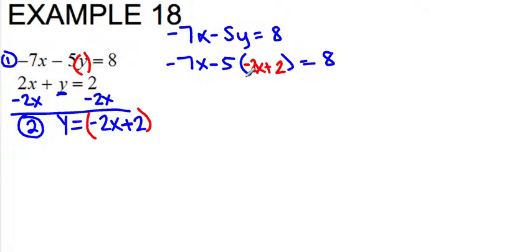And now I have to distribute the negative 5. So I'm distributing negative 5 to both terms. Negative 5 times negative 2x is positive 10x. Negative 5 times positive 2 is negative 10. And then bring down the negative 7x.